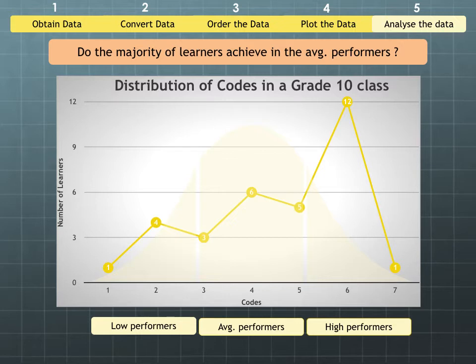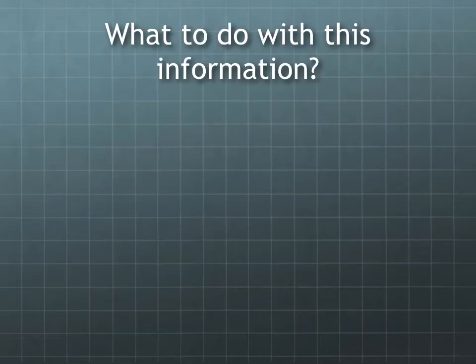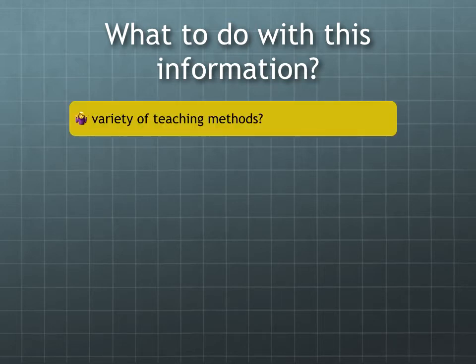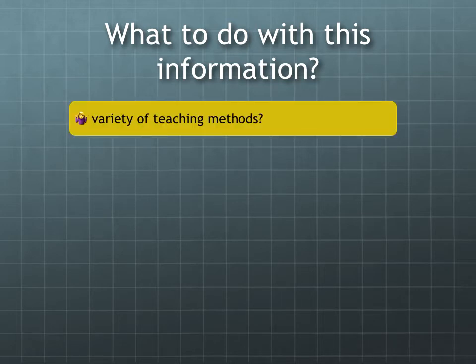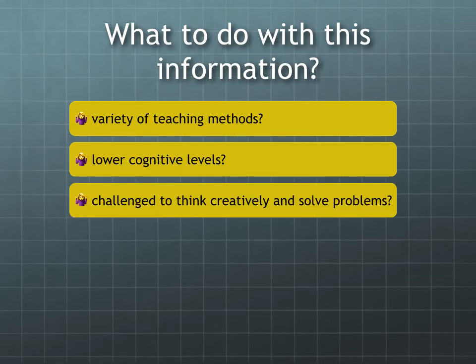So what do we do with this information once we've decided there is a problem, the bell curve doesn't have the shape it should have? We've got to ask the questions to either our colleagues or to ourselves. Were there a variety of teaching methods used? Was there too much assessment at lower cognitive level?